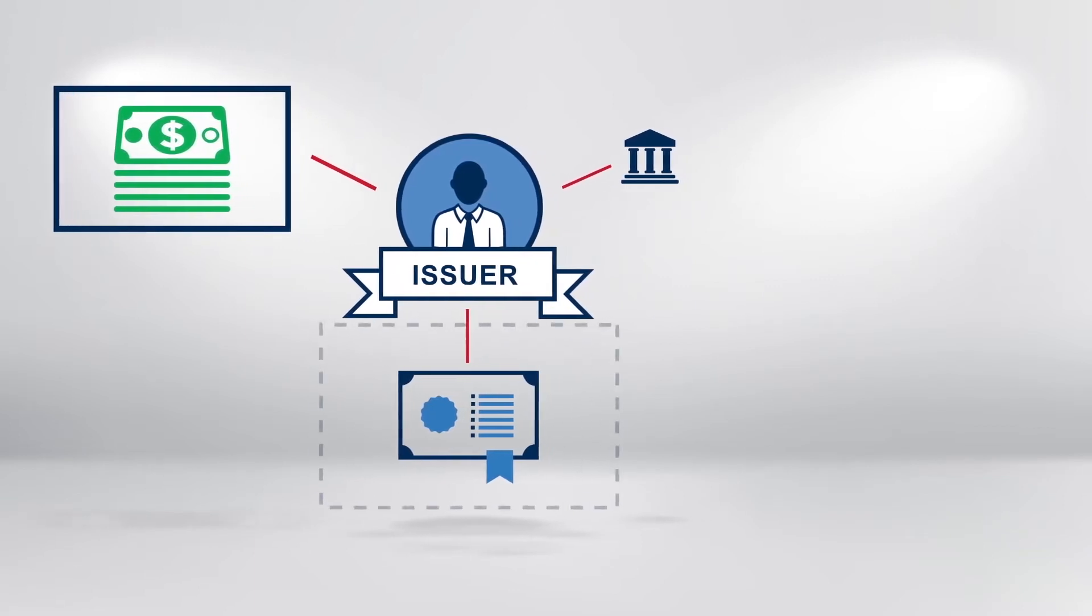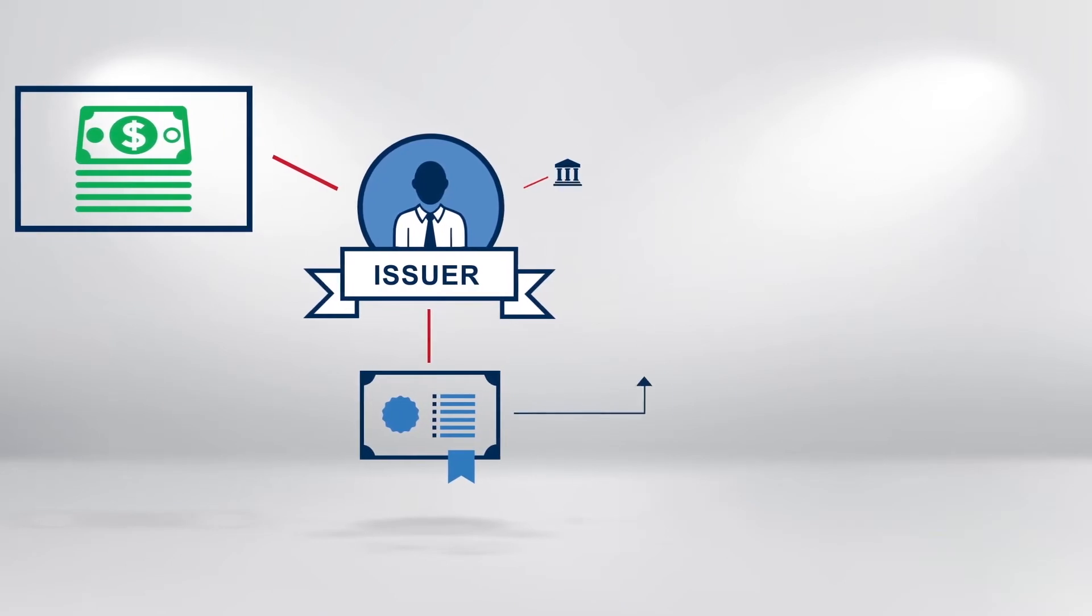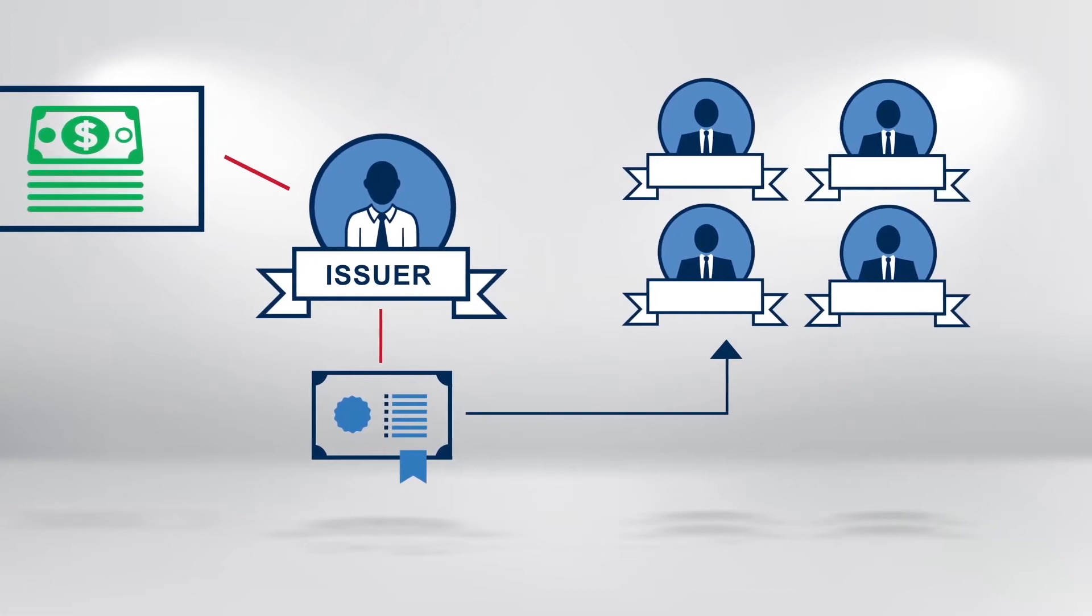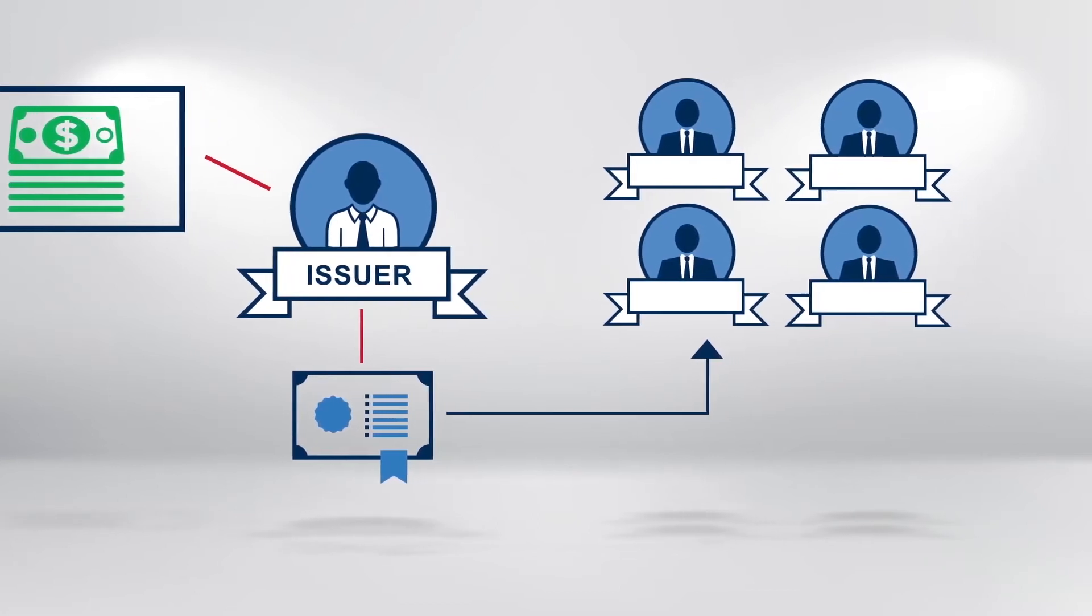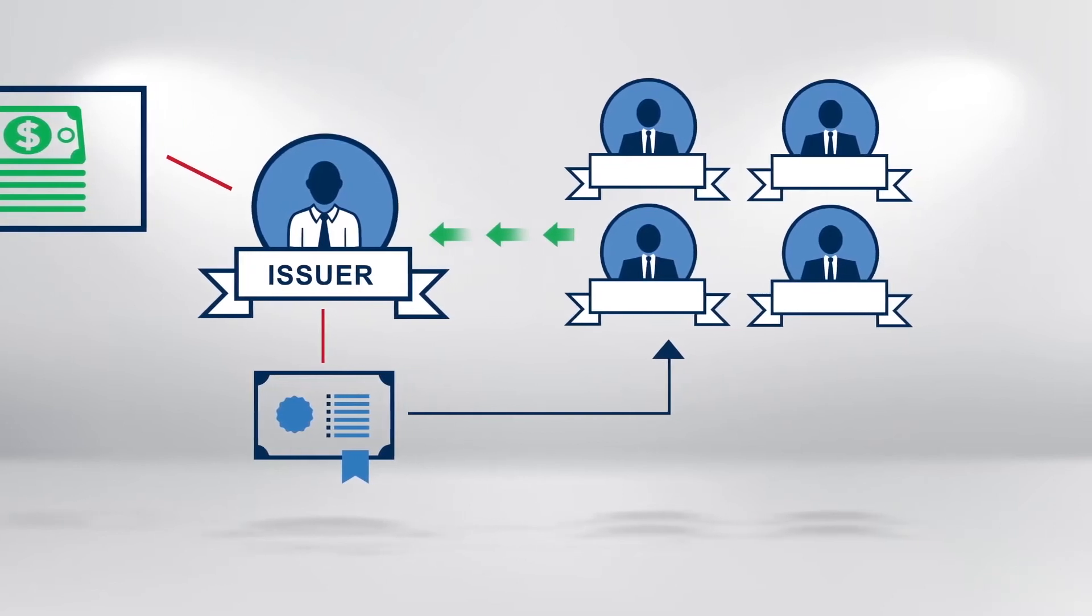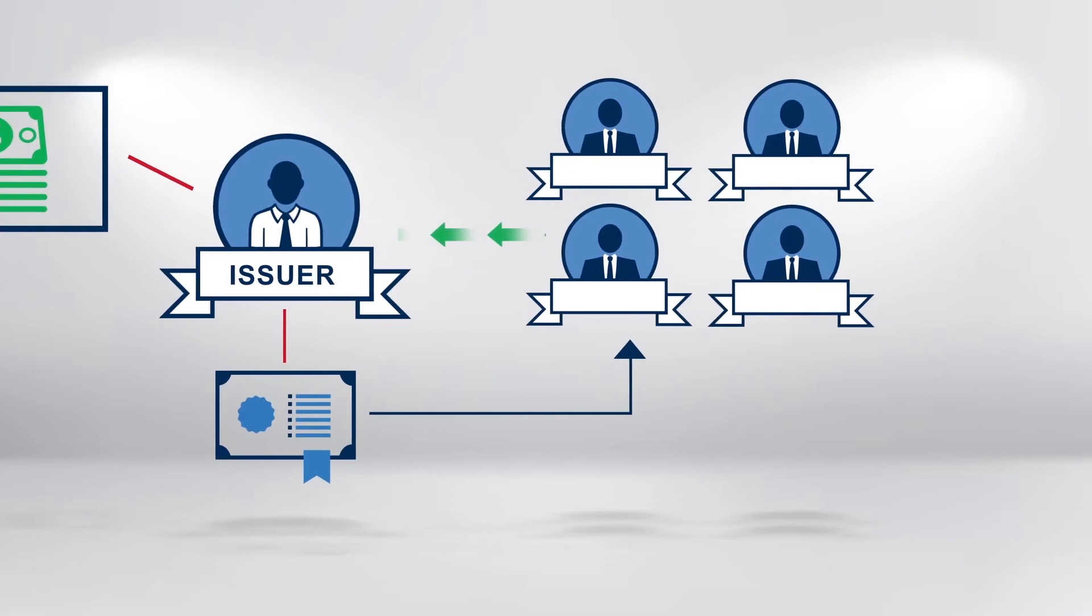So the issuer borrows the money by issuing a bond. With a bond, multiple investors each lend the issuer a fraction of the total issued amount. Also for many large corporates, it makes sense to borrow directly from investors instead of a bank. It's both cheaper and more efficient.